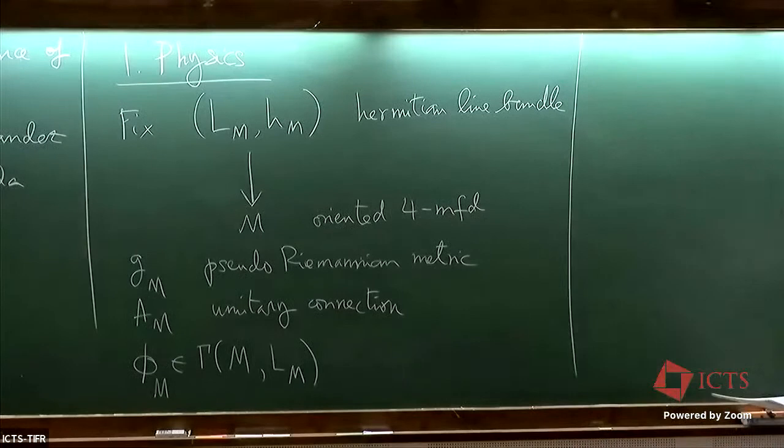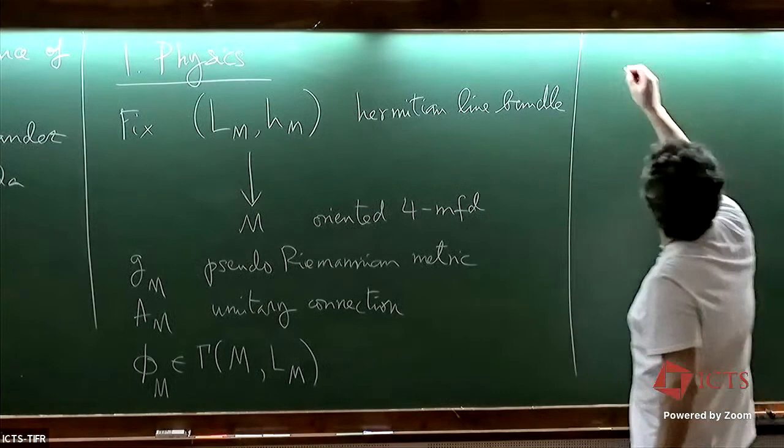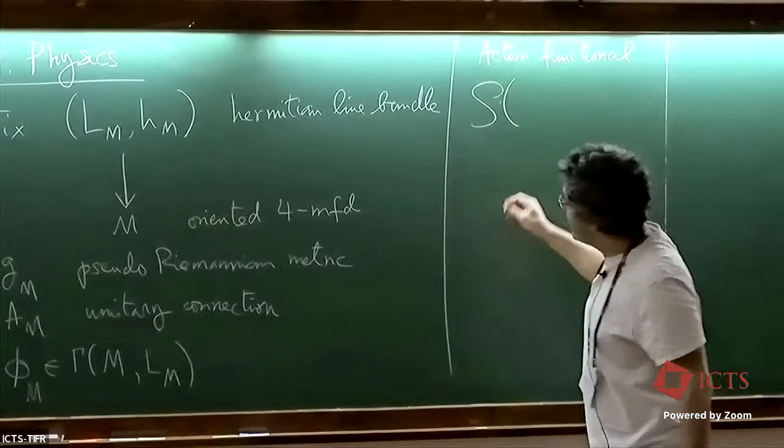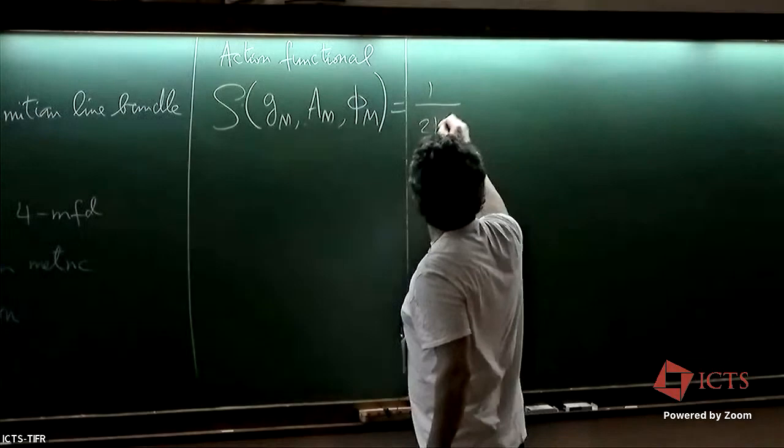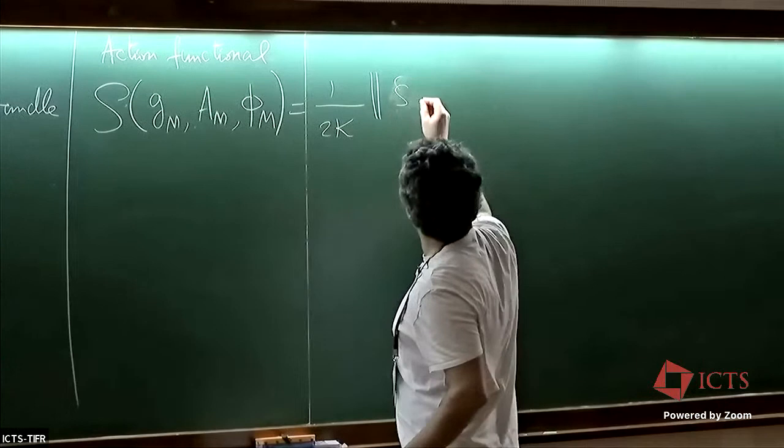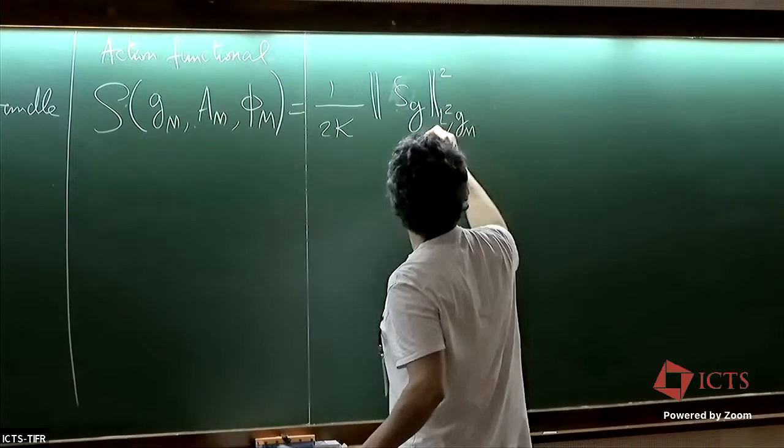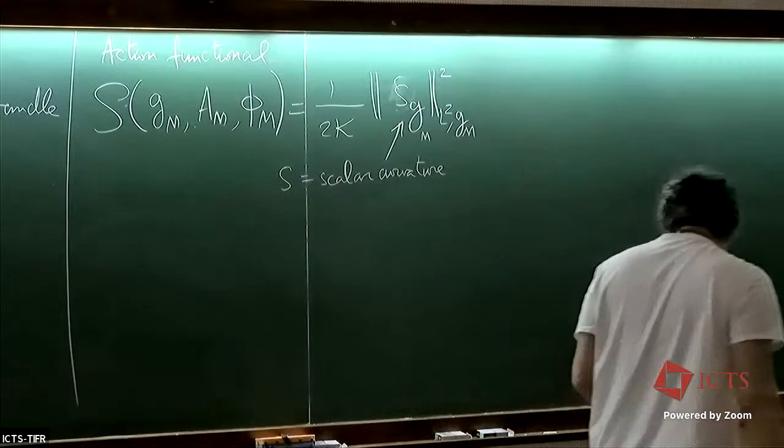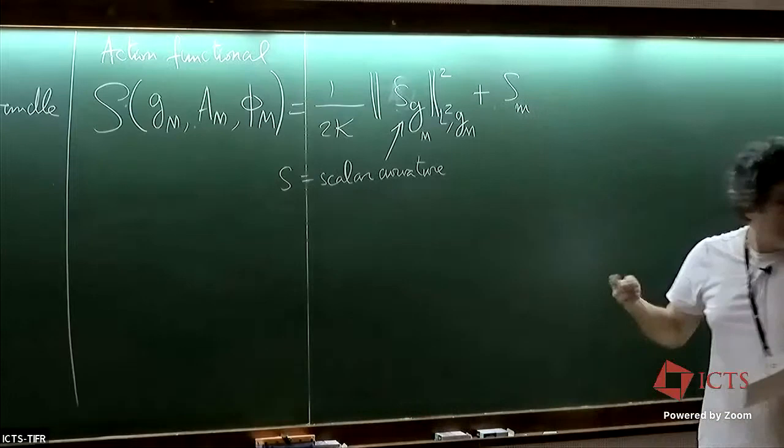Okay, then applying usual physics you write an action functional S depending on all this data. So it's usually written as the sum of 1 over 16 pi times the Einstein-Hilbert action detected by the metric. This is written as R plus some matter Lagrangian part.